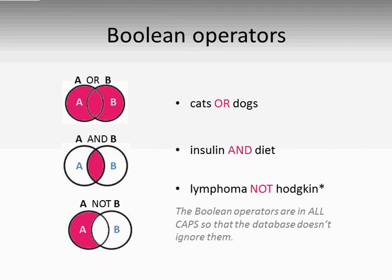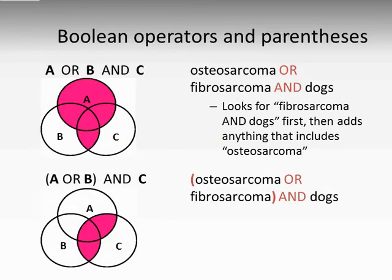Most databases and search engines are programmed to ignore the words and, or, and not, because every piece of writing in the English language uses them, making them useless as search terms. If you want the database to know that you mean OR as a command rather than a search term it should ignore, put it in all caps. Boolean searching can get more complicated when stringing together more than two search terms. People sometimes refer to Boolean searching as Boolean algebra because, like math, there's an order of operations. Unlike math, you don't necessarily know what the order is for any given database. To work with this, you can put parentheses around concepts that go together to force the database to address them in the correct order.